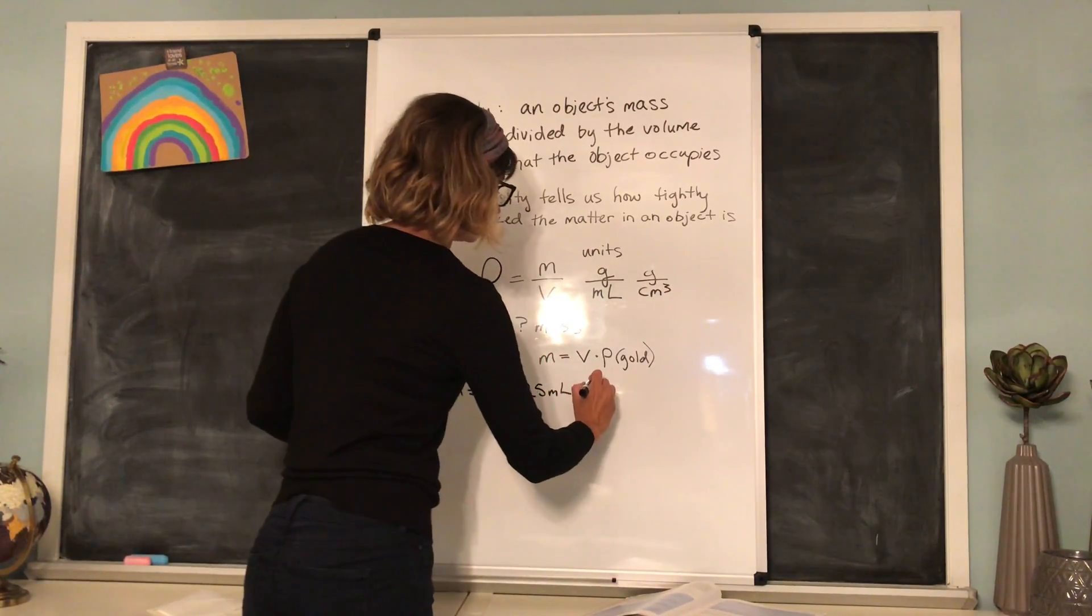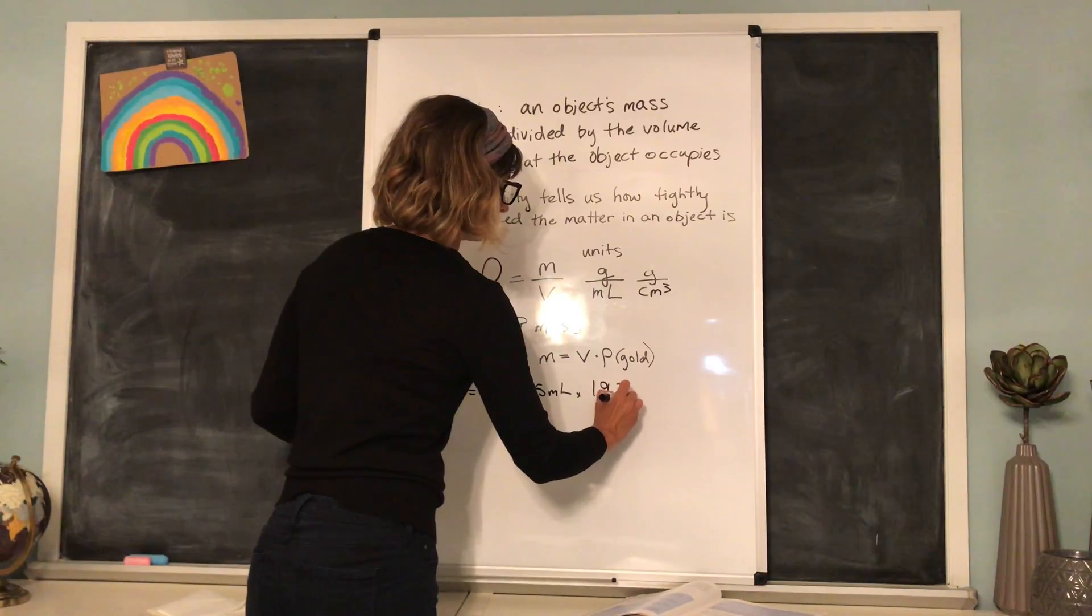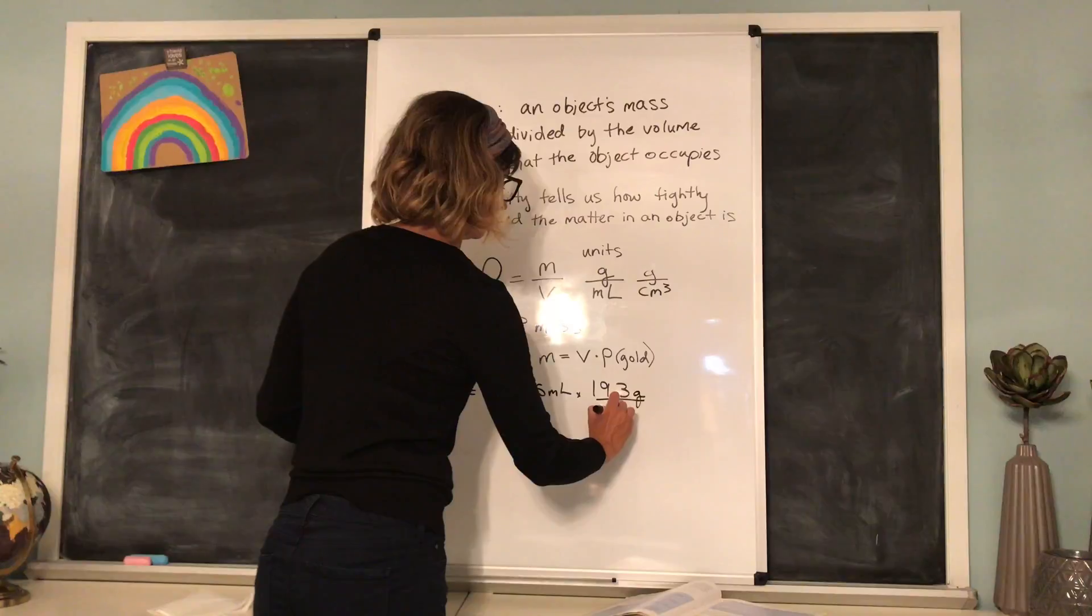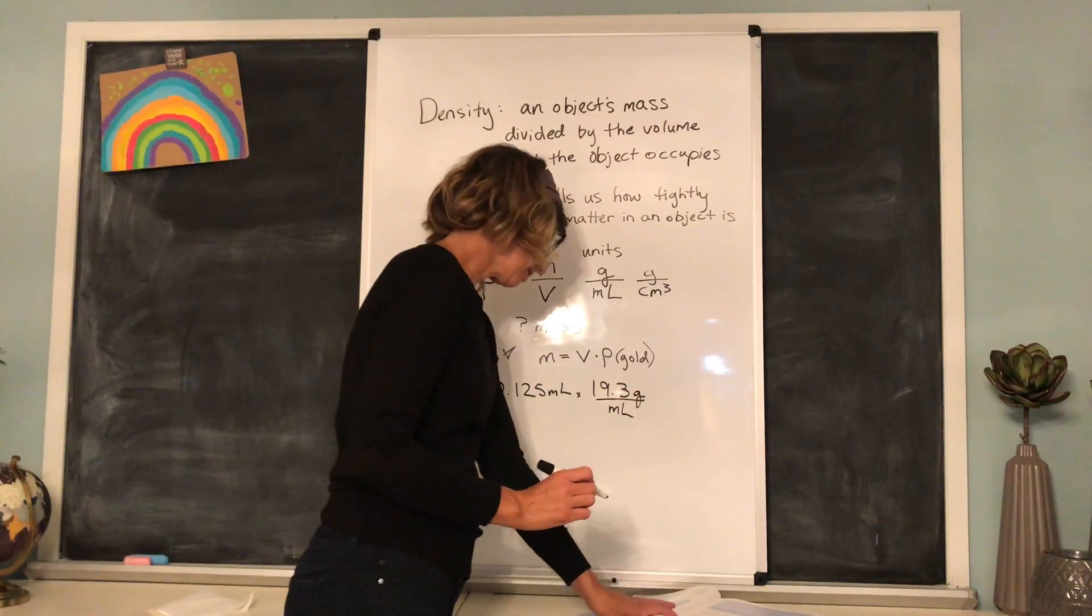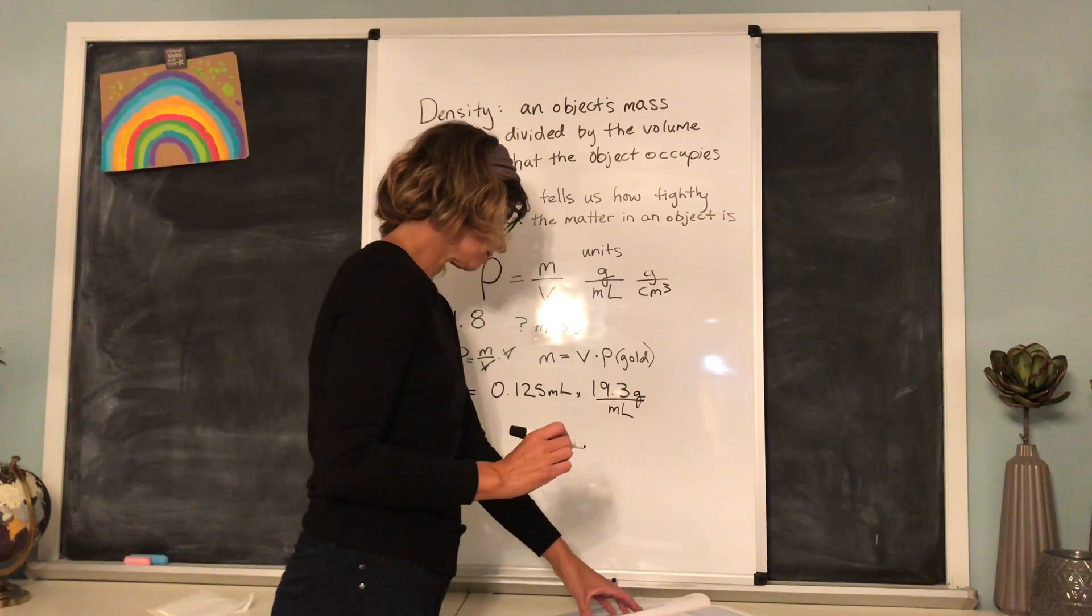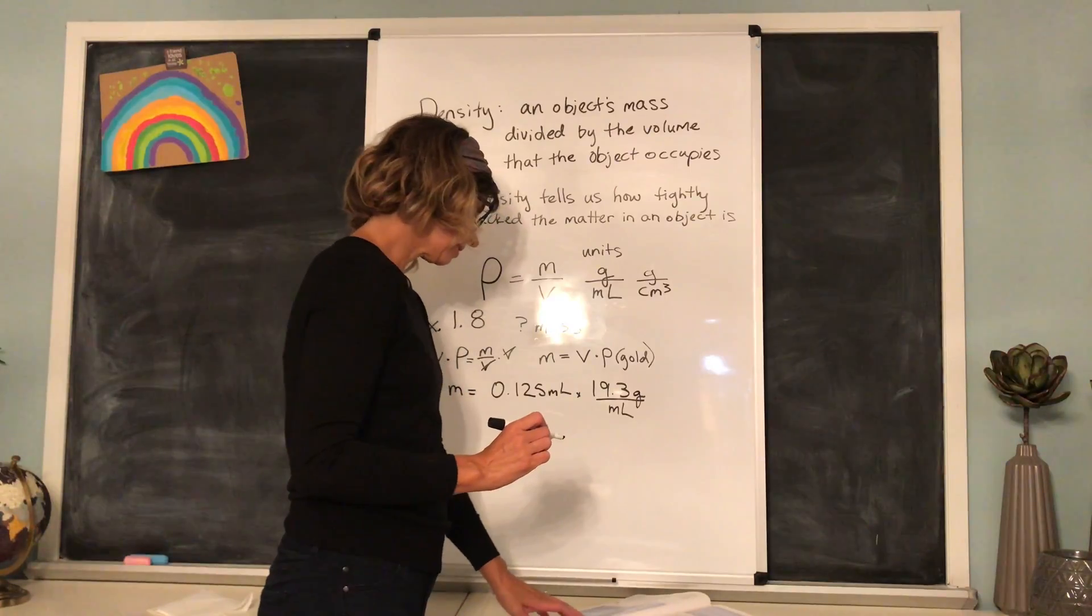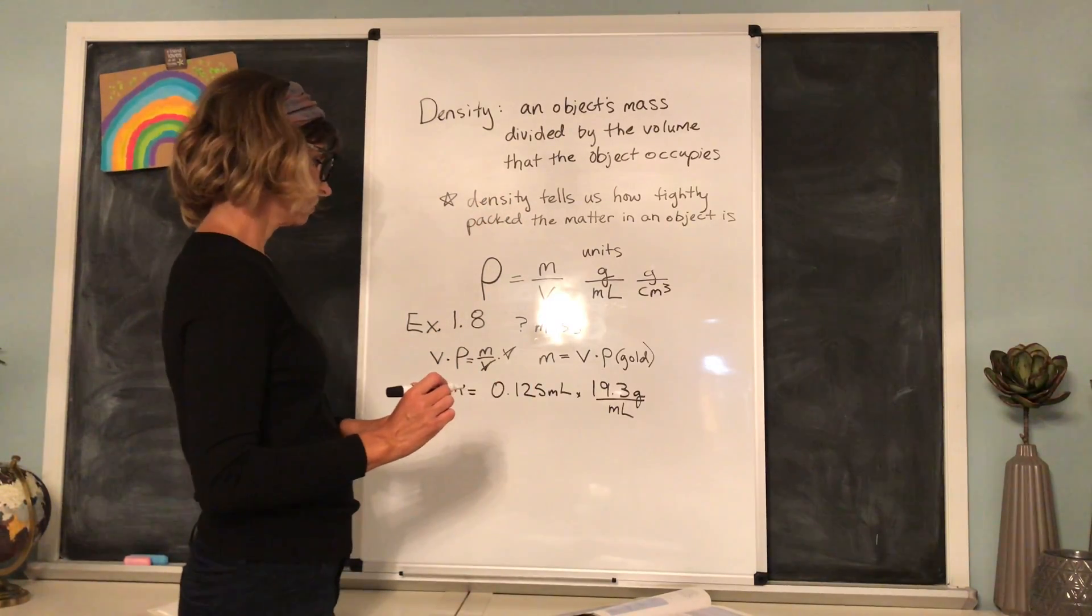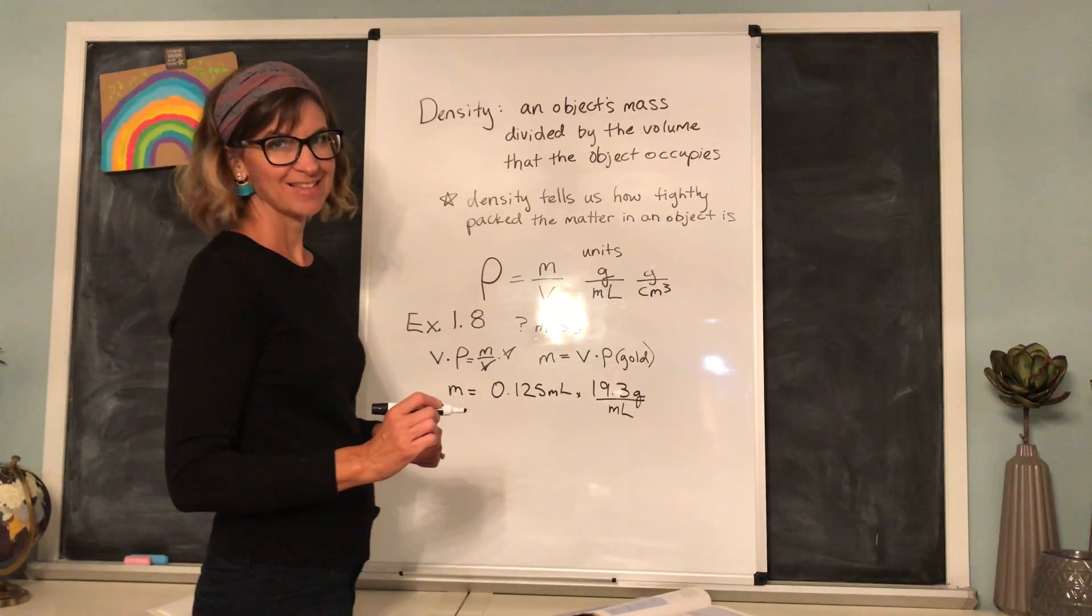It's always 19.3 grams per milliliter. Did I get that right? Checking back to my example in the book here. Yes, I did. So then we just have to multiply it out. Do you see any problems though? I see a problem.